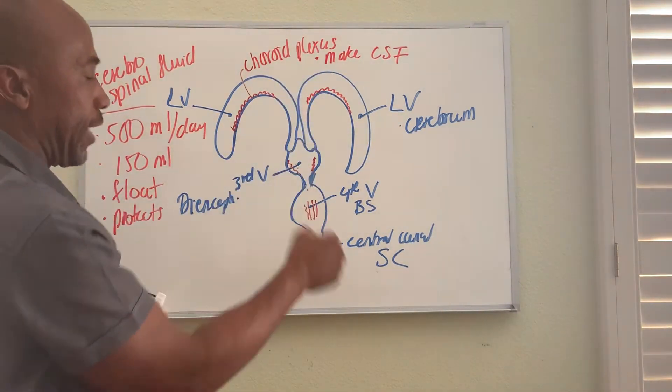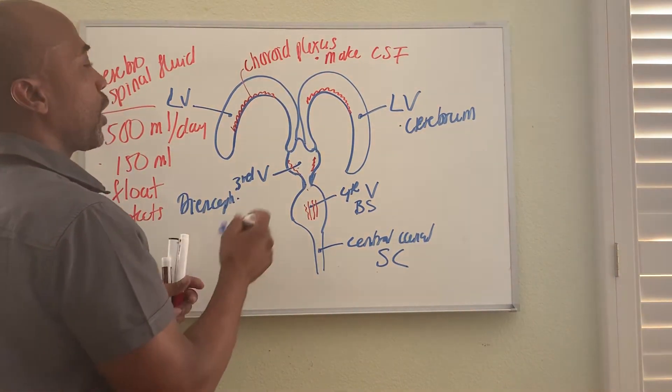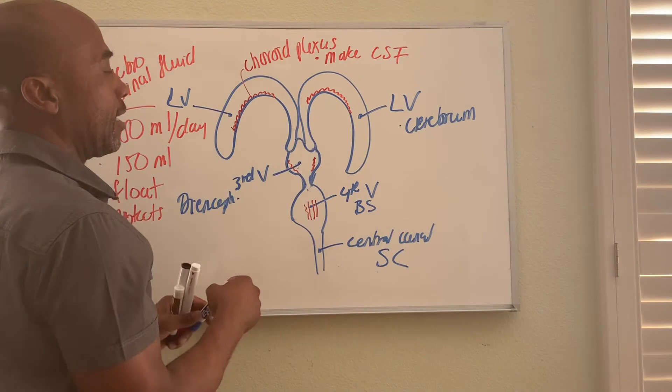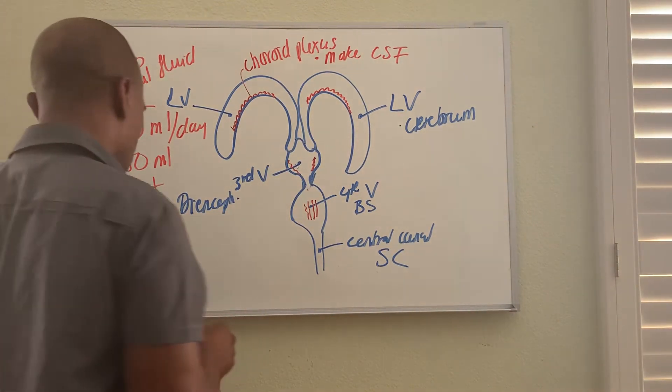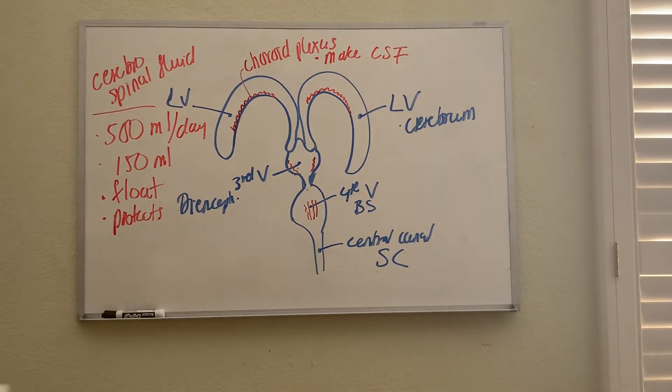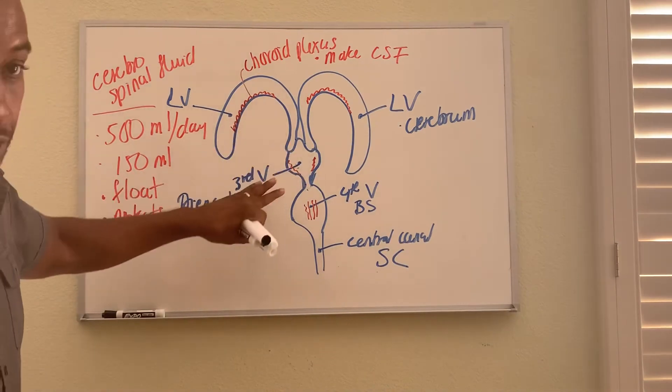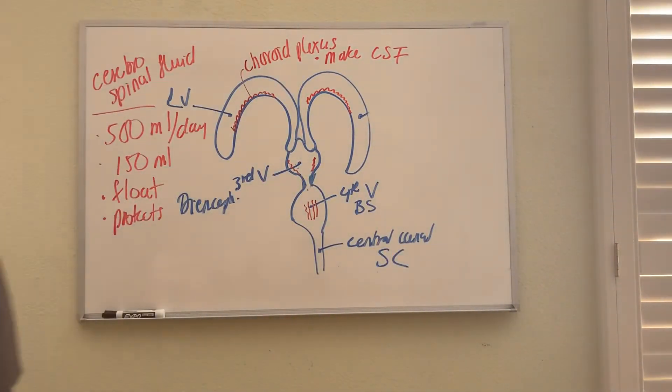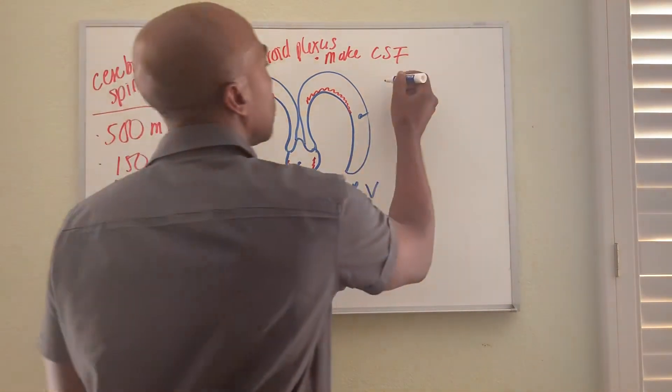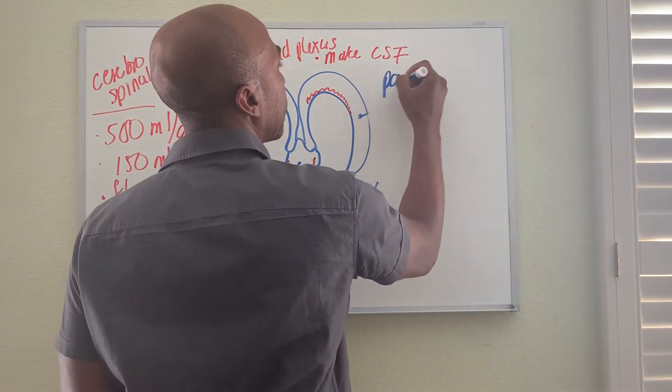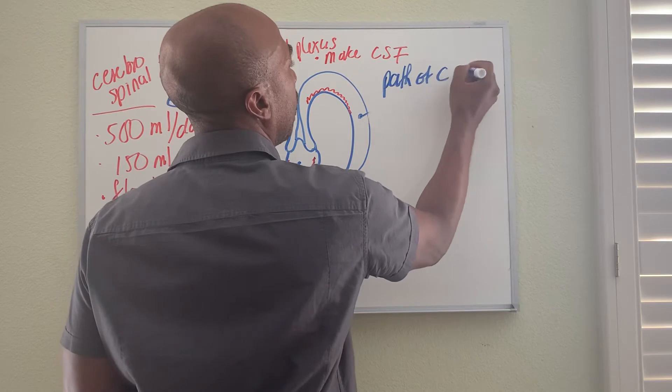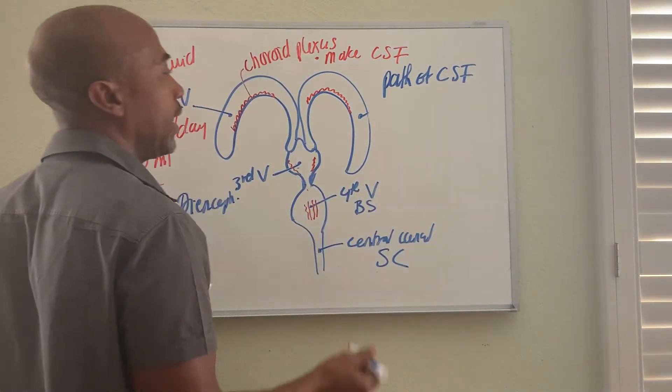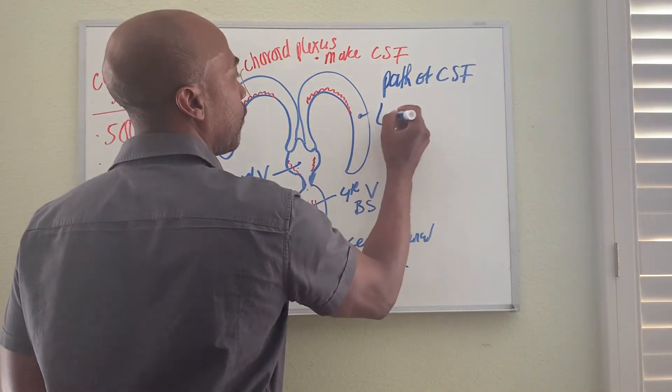Now the CSF has a certain pattern that it flows through, so we're going to look at how the CSF circulates. Let's start here in the lateral ventricles. It's made in all four ventricles, but we begin at the lateral ventricles. So the path of CSF begins at your lateral ventricles.